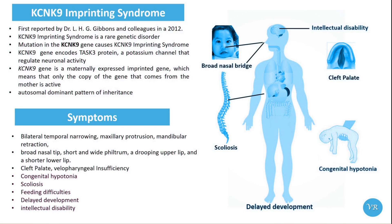Symptoms include motor and cognitive delays, feeding difficulties, intellectual disabilities, seizures, abnormal movement or motor coordination, sleep disturbances, and growth retardation. The syndrome is caused by mutation in the KCNK9 gene.